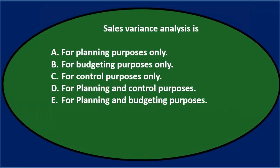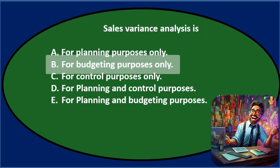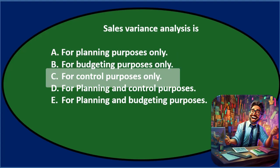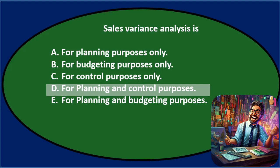First question: Sales volume analysis is either A, for planning purposes only; B, for budgeting purposes only; C, for control purposes only; D, for planning and control purposes; or E, for planning and budgeting purposes.